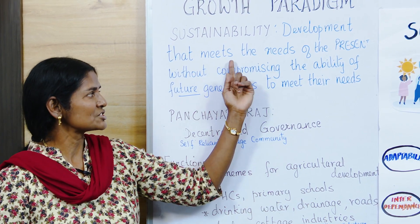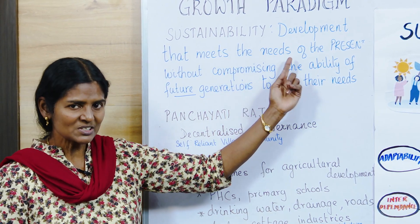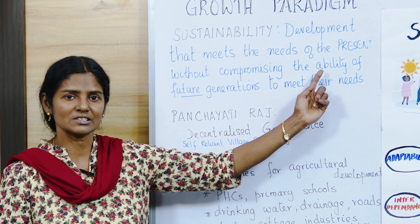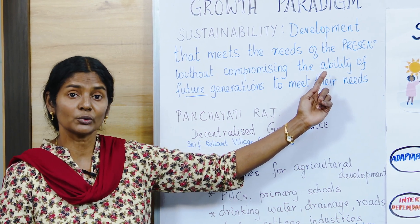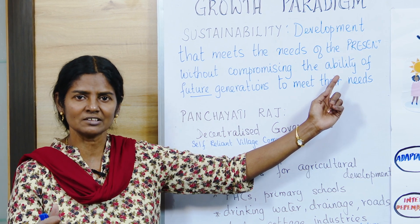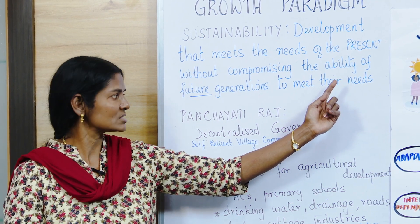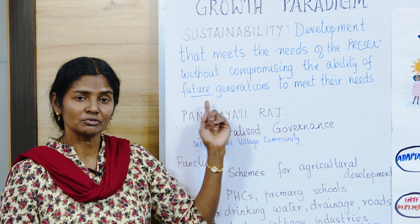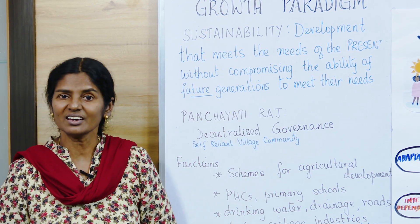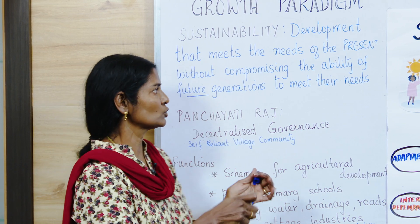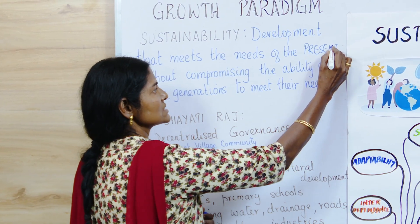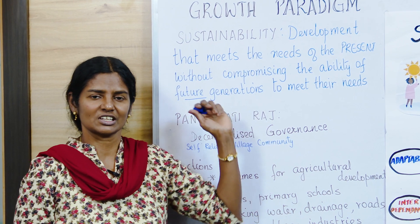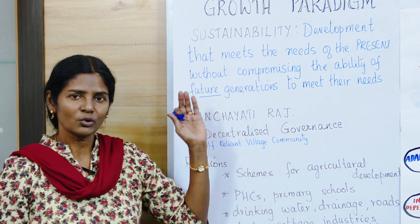The definition of sustainability goes this way: development of the needs of the present — how do we develop, conserve, and improve — without compromising on the ability of future generations to meet their needs. So there are two phases: one is the present, and the other is about future generations.